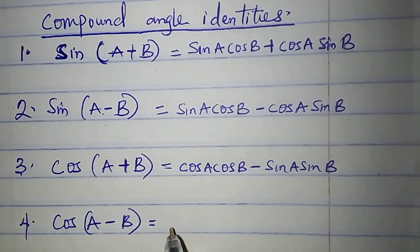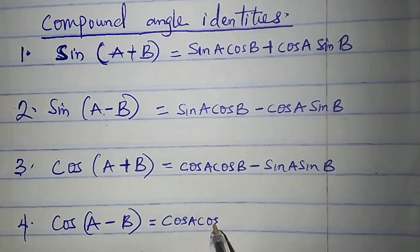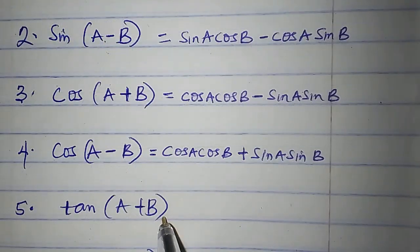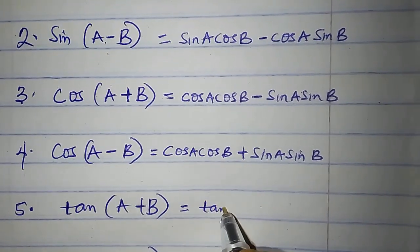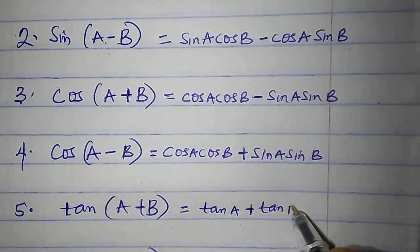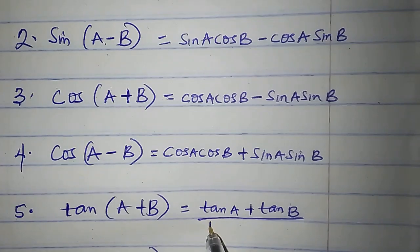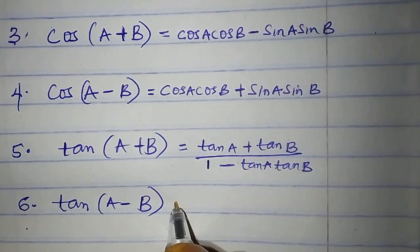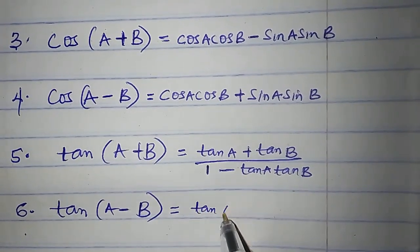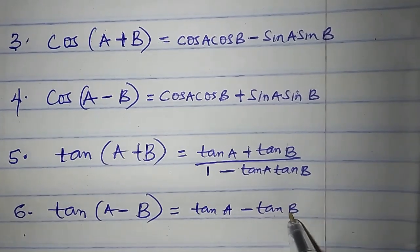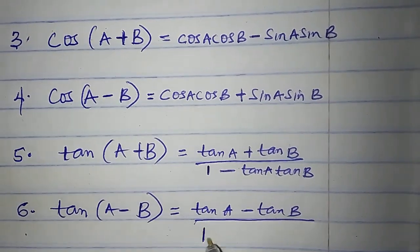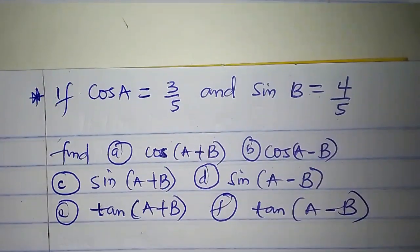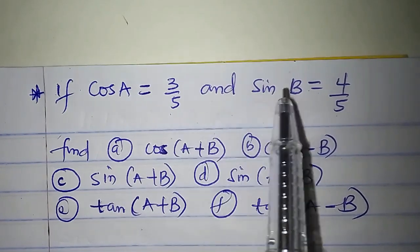Cos(A−B) is cos A cos B plus sin A sin B. Tan(A+B) is tan A plus tan B, all divided by 1 minus tan A times tan B. Tan(A−B) is equal to tan A minus tan B, all divided by 1 plus tan A tan B.